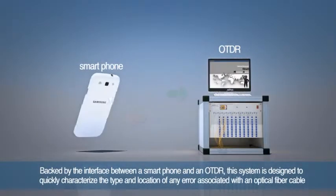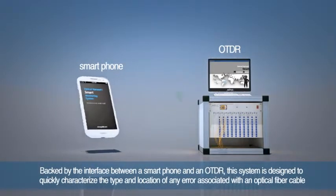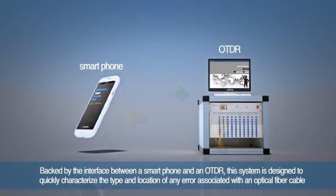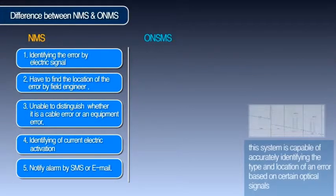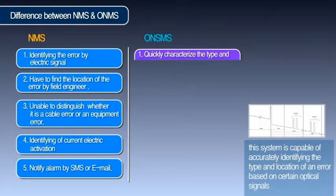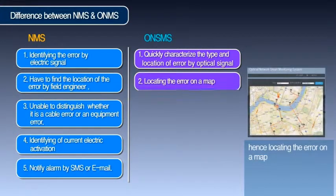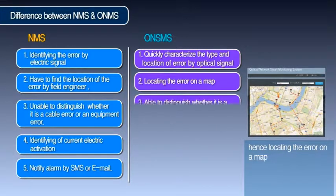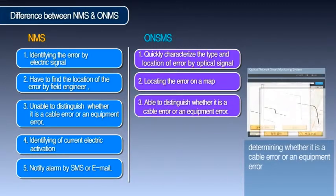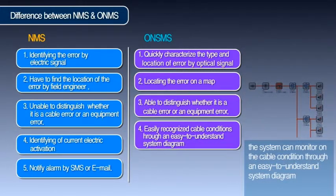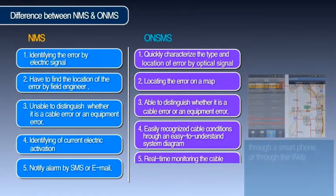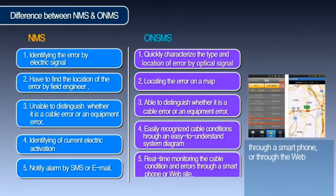This system is designed to quickly characterize the type and location of any error associated with an optical fiber cable. Backed by the interface between a smartphone and an OTDR, this system is capable of accurately identifying the type and location of an error based on certain optical signals, hence locating the error on a map, and determining whether it is a cable error or an equipment error. The system can monitor the cable condition through an easy-to-understand system diagram through a smartphone or through the web.